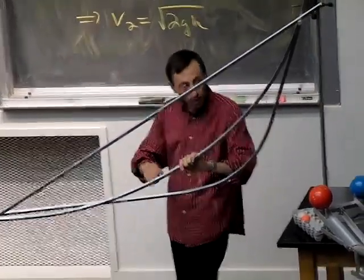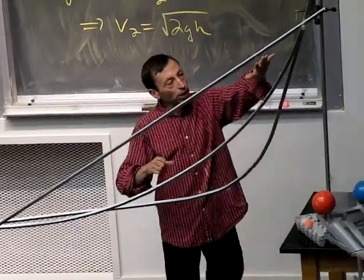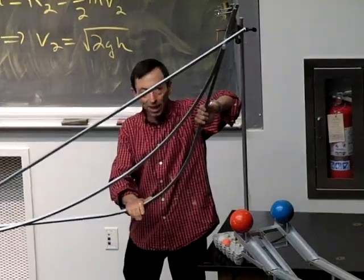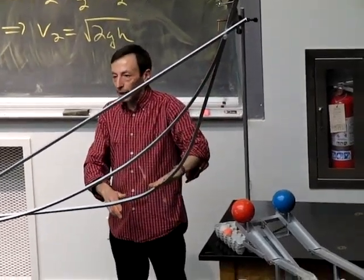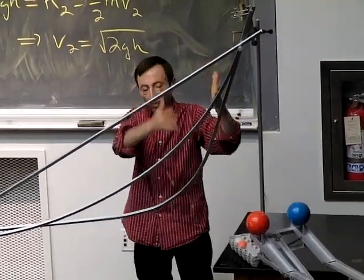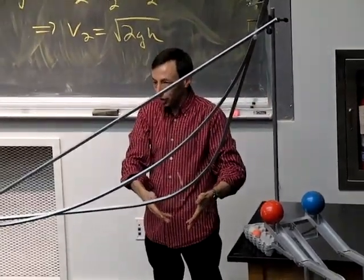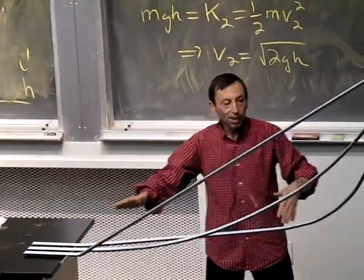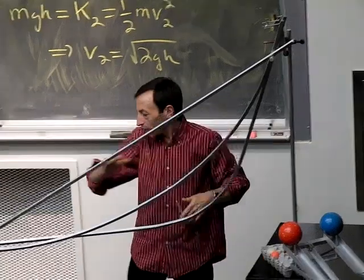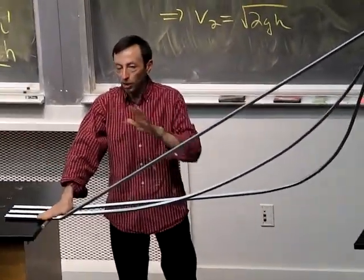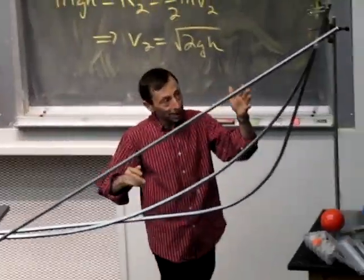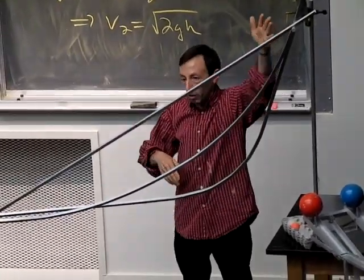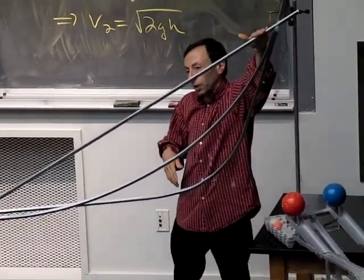Economists use the calculus of variations for optimization. Here you've got an example of a very steep decline — you're letting the thing go almost in free fall, it zips down really fast, but the price you pay is a very long path. With a straight line, you've minimized the path, but at the expense of a gradual incline where the speed is fairly low at the beginning.